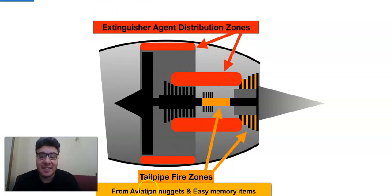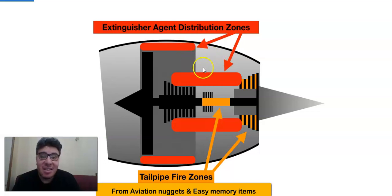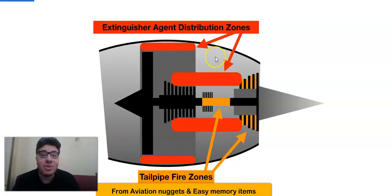This is a very good schematic — thank you, Tino Janki, my friend, the owner and founder of Easy Memory Item. The difference between engine fire and tailpipe fire is mainly due to location. This is the area where an engine fire or external fire will propagate. This is a sensitive area of the engine where high temperature is present and flammable fluid ducts are running. Fire loops or fire detectors are located in this area.